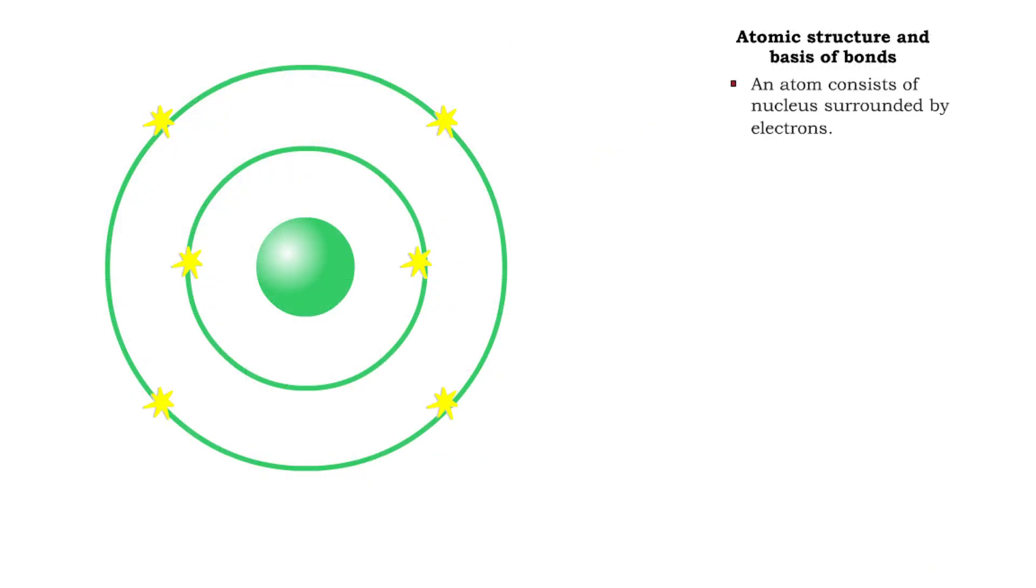An atom consists of a nucleus, surrounded by charged particles called electrons. The electrons exist in various layers surrounding the nucleus, called orbitals.